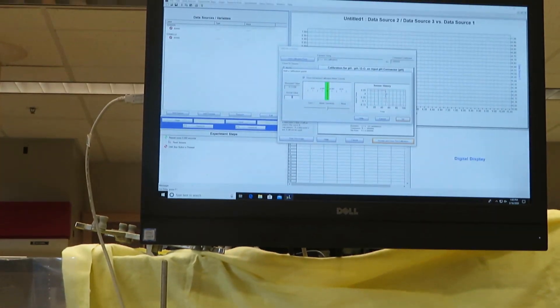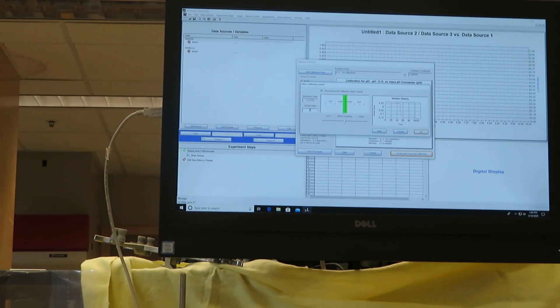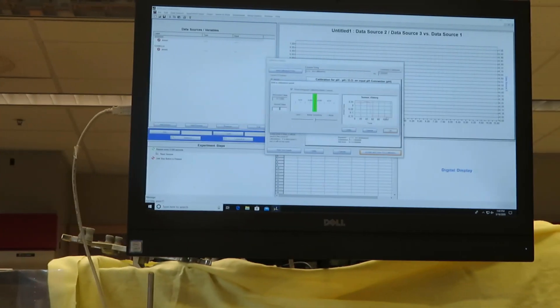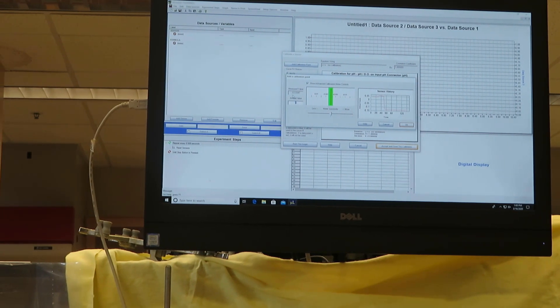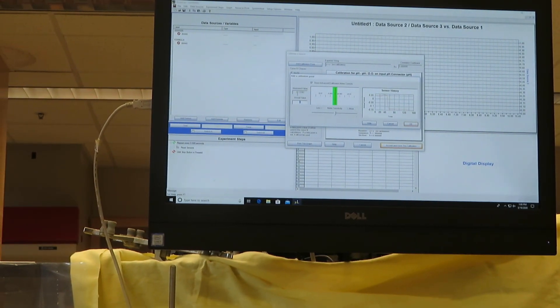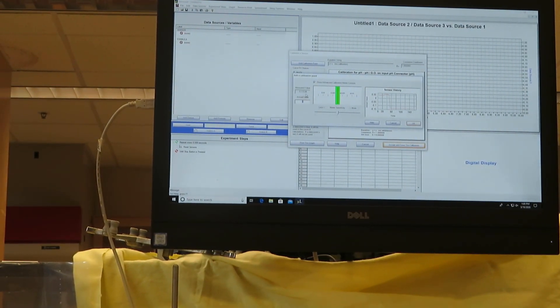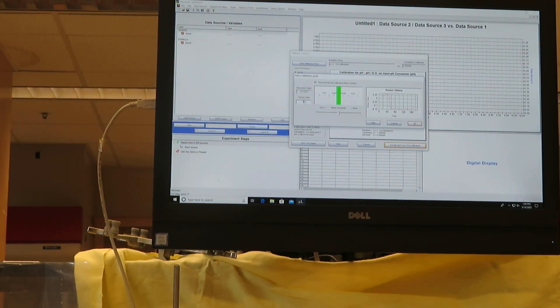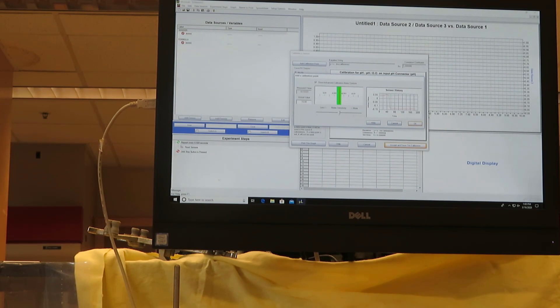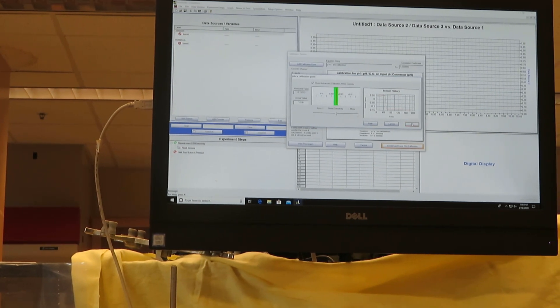Once again, the reading has changed dramatically because we're in a new solution. You notice that the voltage reading is negative, but it's holding reasonably steady to the 4th or 5th decimal place. So I can add 10.00.